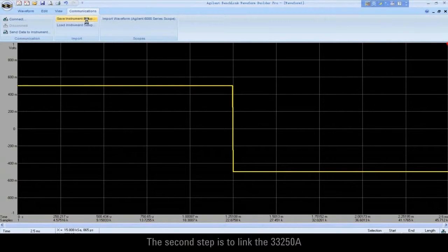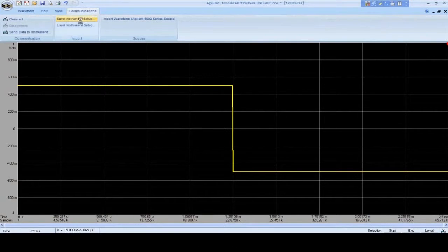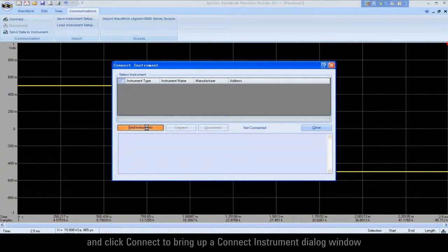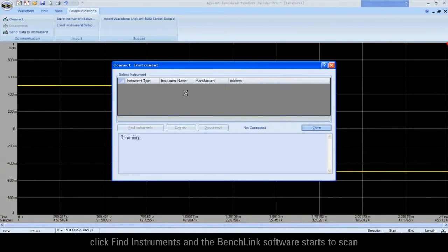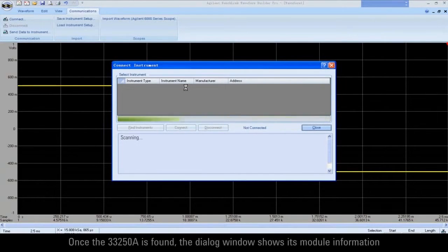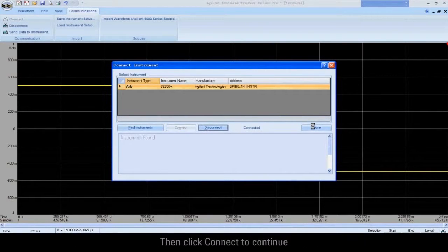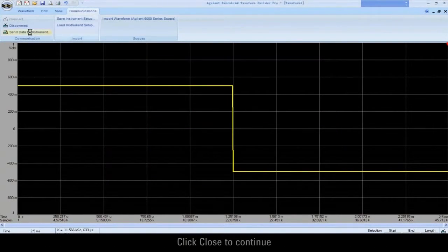The second step is to link the 33250A arbitrary waveform generator to the 33503A BenchLink software. Now, click Communication and click Connect to bring up a Connect Instrument dialog window. In the dialog window, click Find Instruments and the BenchLink software starts to scan any instrument that is connected to the PC. Once the 33250A is found, the dialog window shows its module information. Then click Connect to continue. OK, the 33250A is ready to receive the waveform from the 33503A BenchLink software now. Click Close to continue.